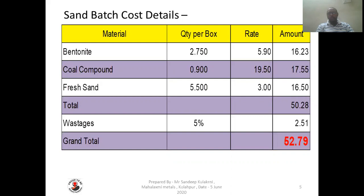We considered here around 2% of sand batches rejected and 3% of mold breakage. So total wastage we consider is 5%, and the wastage cost comes around 2.51 rupees. So total sand batch cost will be 52 rupees 79 paisa.